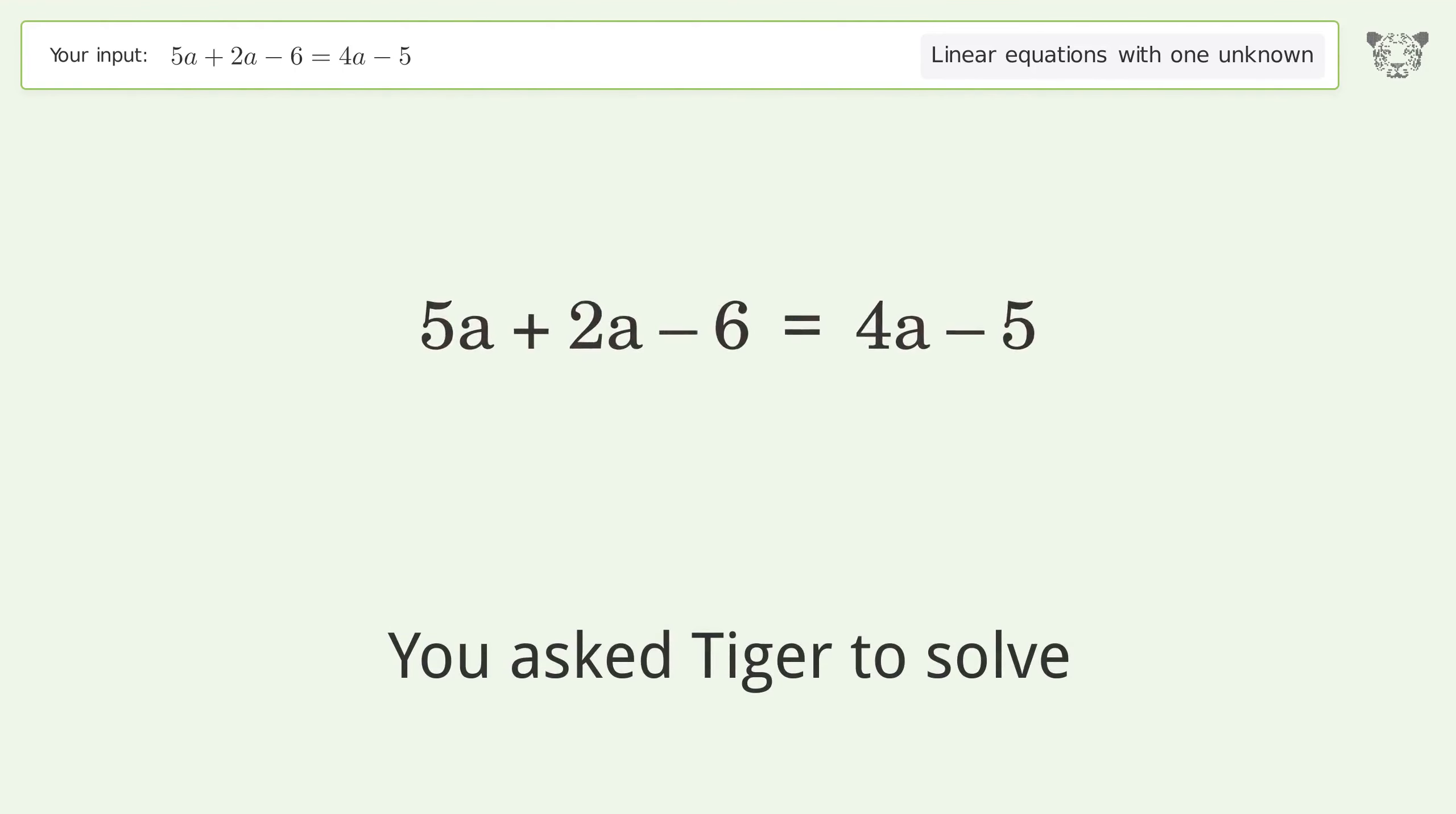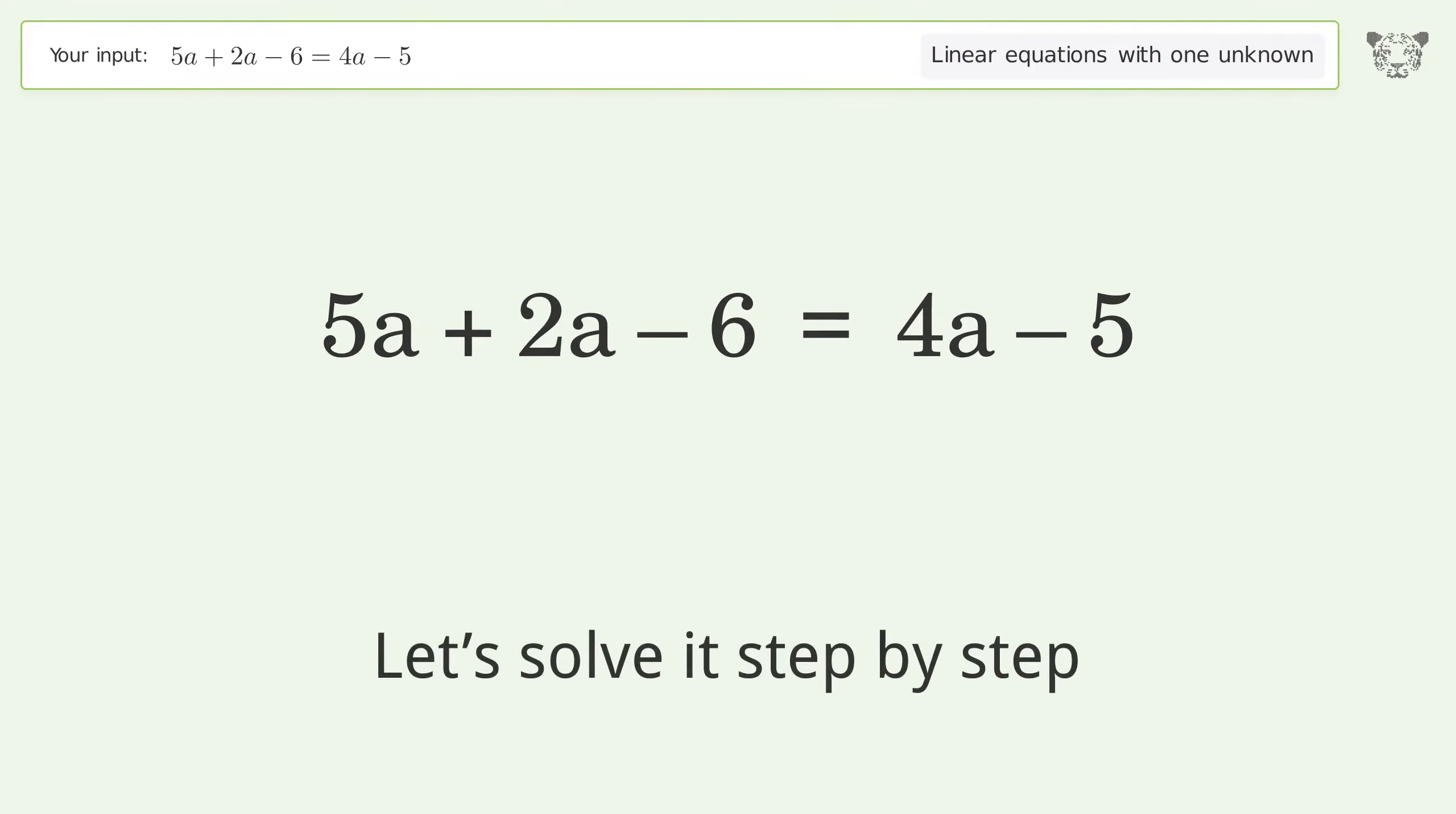You asked Tiger to solve this. It deals with linear equations with one unknown. The final result is a equals 1 over 3. Let's solve it step by step. Simplify the expression, simplify the arithmetic.